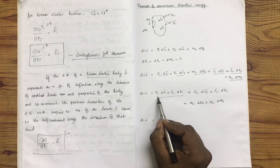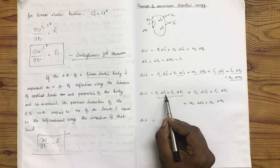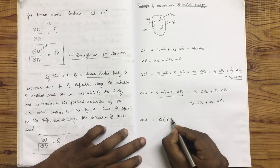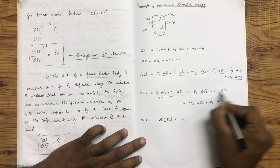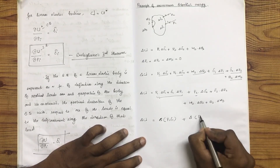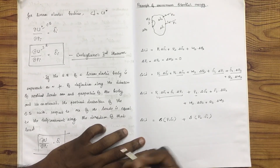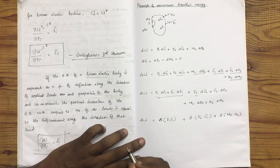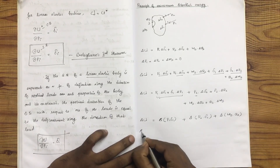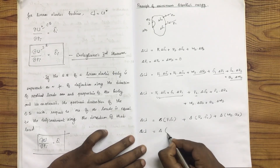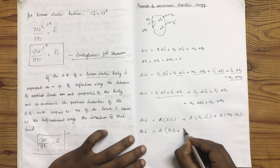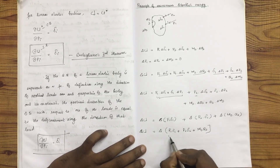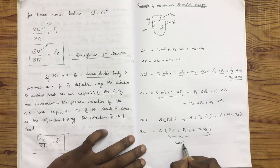The deviation in strain energy is equal to the derivative — first into second plus second into first. Now I represent δ(P1·δ1), then δ(P2·δ2), and δ(M3·θ3). So δU equals δ(P1·δ1 + P2·δ2 + M3·θ3). This is the derivative of force times displacement — the derivative of work done.